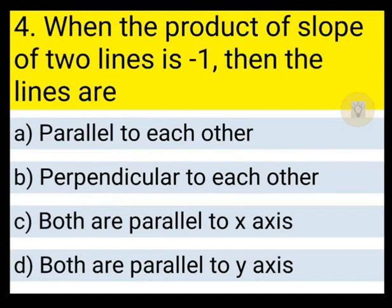Next question: when the product of slopes of two lines is minus 1, then the lines are parallel to each other, perpendicular to each other, both parallel to x-axis, or parallel to y-axis.